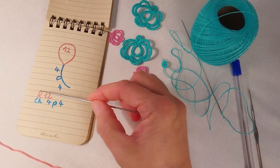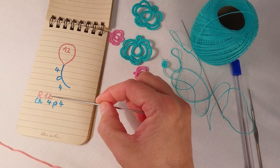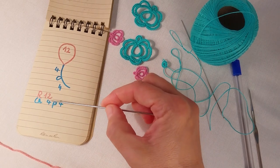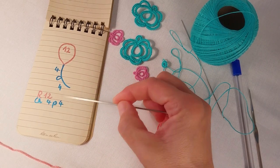If the pattern is written it says ring 12 double stitches and chain 4 double stitches, a picot, and 4 double stitches.